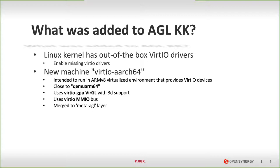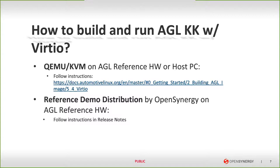Now you probably wonder how to build and run AGL KK with VIRTIO support. There are two ways: either you build AGL and run it on top of QEMU — a hypervisor and virtual machine monitor that supports VIRTIO — and run it on AGL reference hardware, or you can build it for QEMU and run it directly on your host PC. Please follow the instructions on docs.automotivelinux.org, getting started building AGL with VIRTIO. Alternatively, you can obtain the reference demo distribution from OpenSynergy and run it on the AGL reference hardware. Please follow the release notes in the distribution.